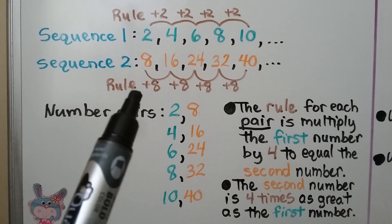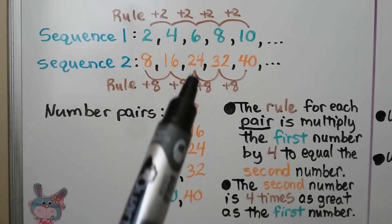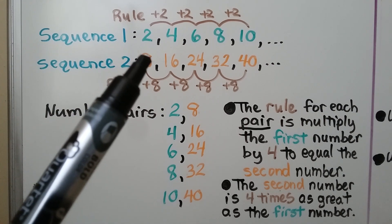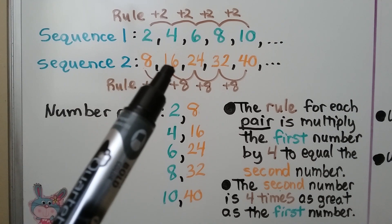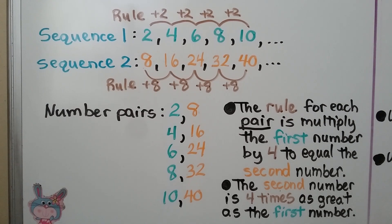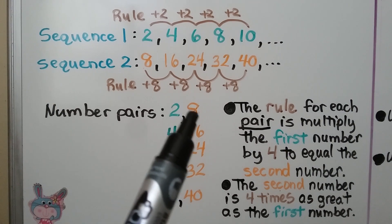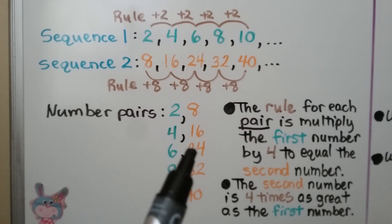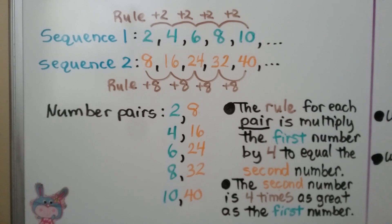For sequence 2, the rule is add 8. We add 8 to get to the next term in the sequence. We can write number pairs: 2 and 8 as (2, 8), and 4 and 16 as (4, 16), and so on. The rule for each pair is multiply the first number by 4 to equal the second number: 2×4=8, 4×4=16, 6×4=24. The second number is 4 times as great as the first. The rule that relates sequence 1 to sequence 2 is multiply by 4.